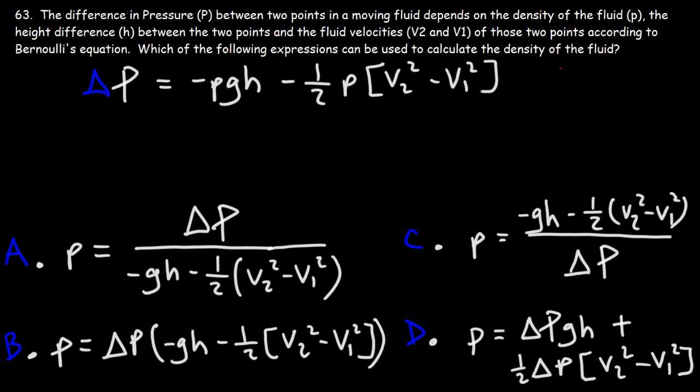The density of the fluid is represented by the Greek symbol rho, which looks like a lowercase p. We need to isolate rho, but there are two of them. Whenever you want to isolate a variable and you have more than one of that variable, what you need to do is factor. So we're going to factor out the density.